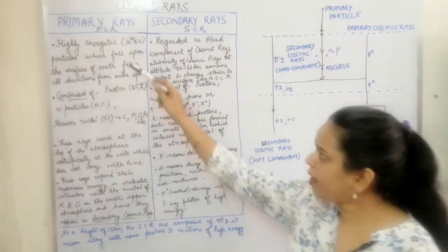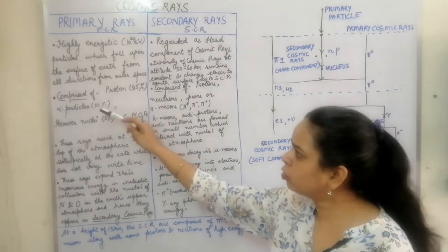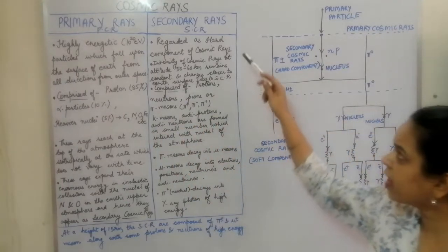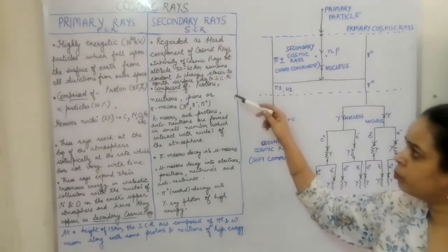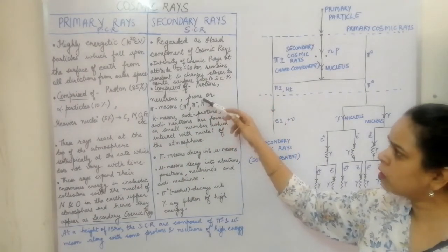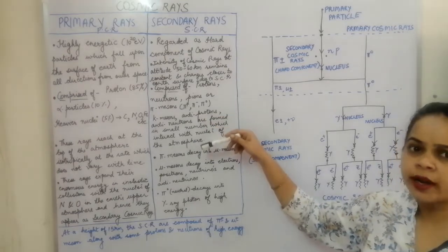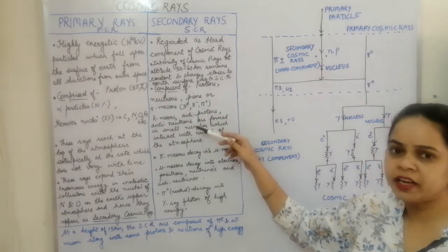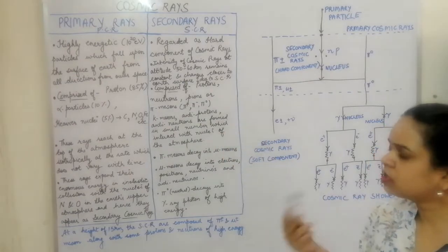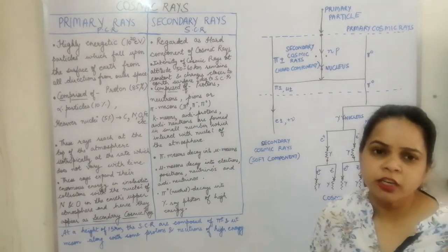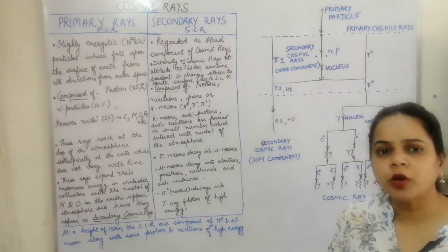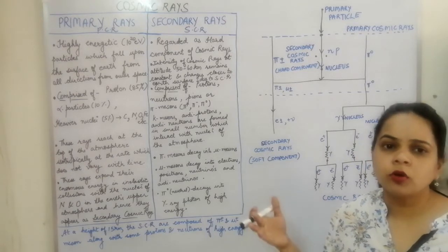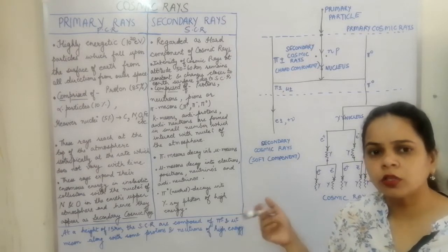While the primary rays are composed of protons, alpha particles, and nuclei of carbon, nitrogen, and oxygen, the secondary rays are composed of protons, neutrons, pions, and the smaller elementary particles — pi mesons, K mesons, antiprotons, and antineutrons. These mesons, when they interact with the nuclei, are helpful in the production of gamma rays which cause the secondary cosmic showers.